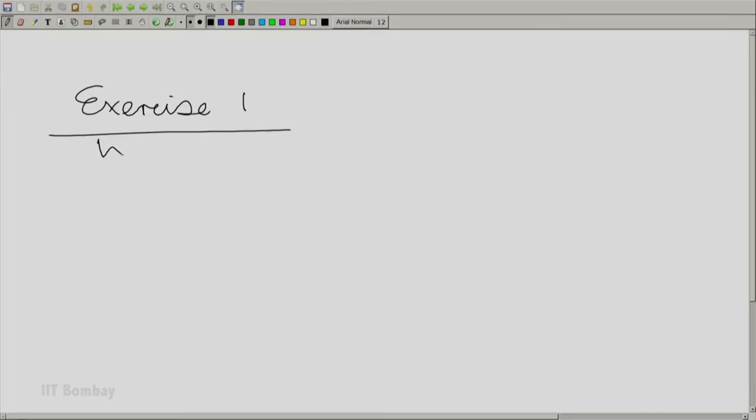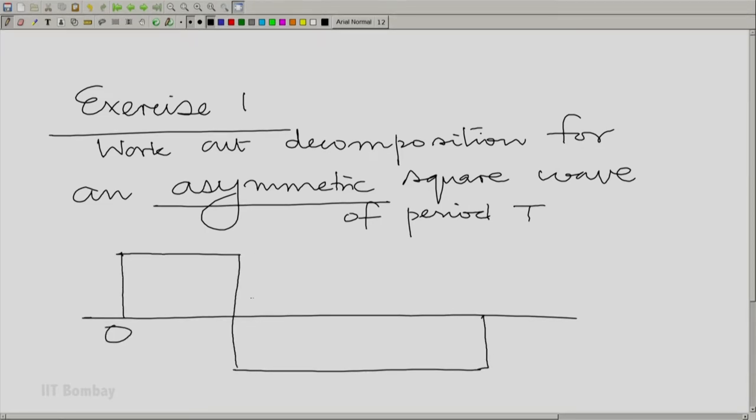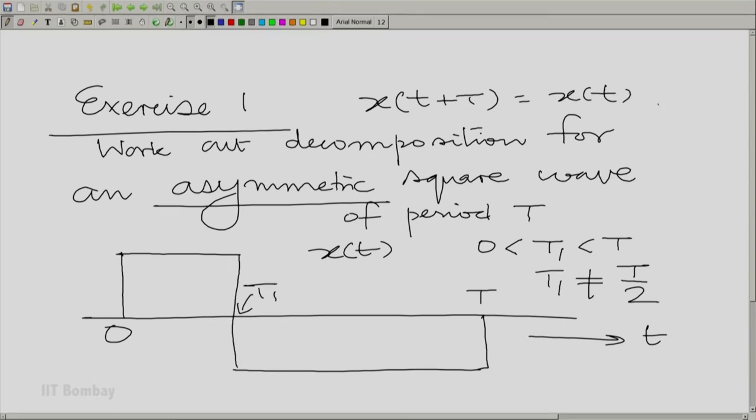Let me put down those exercises. Exercise 1: work out the decomposition for an asymmetric square wave. That means, the period remains at T, however, the transition is somewhere other than the middle. So, let us say the transition is at t1, this is how x(t) looks. t1 is between 0 and T, but not equal to T/2. And of course, as usual x(t+T) is equal to x(t) for all t. This, please remember again, is the symbol for all.